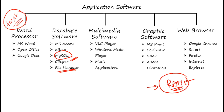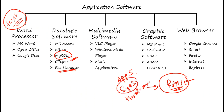Fifth is the web browser. A web browser is an application software used to access or search information on the internet. It has many features like browsing history, bookmarking web pages, and installing extensions to customize the browser. The major thing to remember is that all application software runs over system software — application software needs a platform to interact with hardware, and that platform is provided by system software, primarily the operating system.